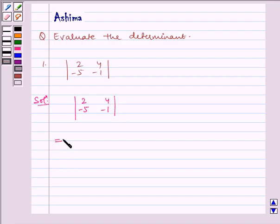So using the key idea, solving this we get 2 times minus 1 minus 4 multiplied by minus 5.